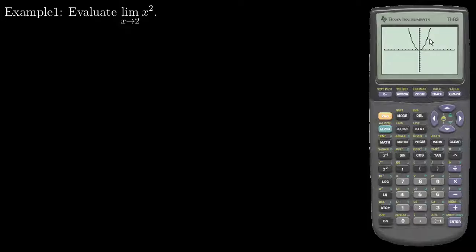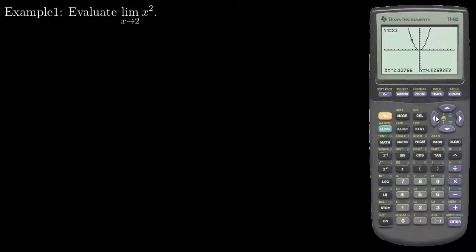We see this graph, and I can trace as X gets closer to 2. So at negative 1.7 I was at about 2.89, at negative 1.9 I was at 3.6668. On the other side, at negative 2.34 I'm at 5.47, at negative 2.12 I'm at 4.5. It may be hard to see what this is approaching, but we have a pretty good idea — and I can zoom in.